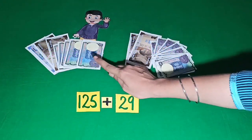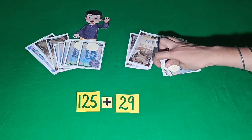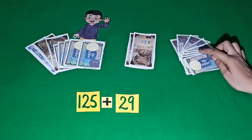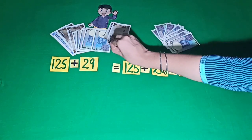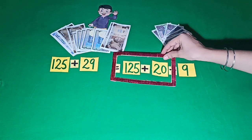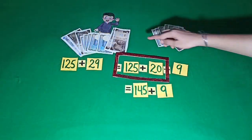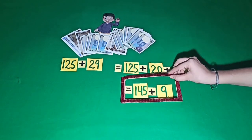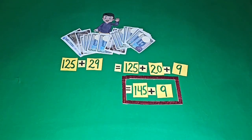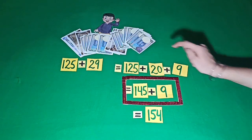Now, with 125 and 29 rupees, we can also split 29 rupees as 20 and 9. Rupees 125 and 20 more becomes rupees 145. Rupees 145 and 9 more becomes rupees 154. So Manoj now has 154 rupees.